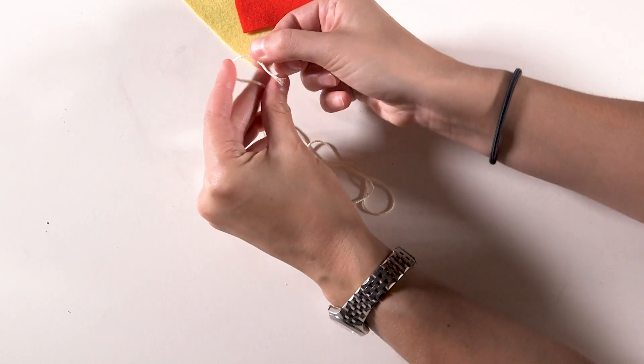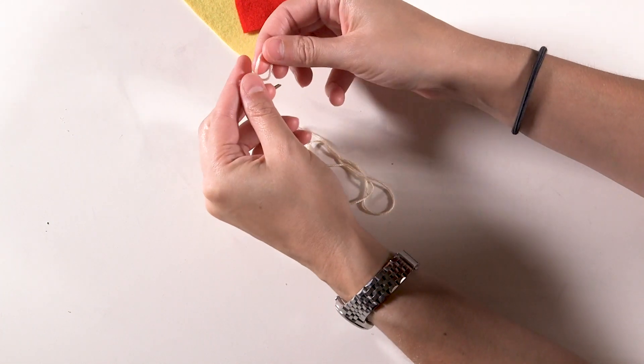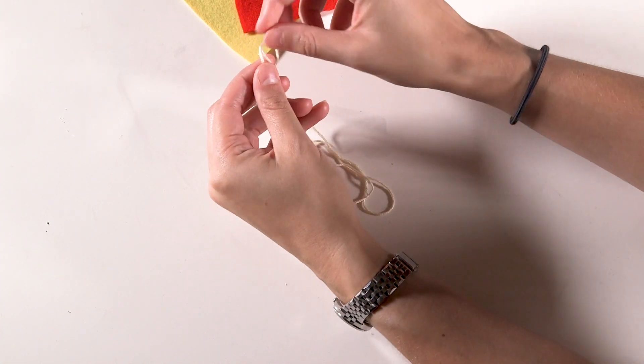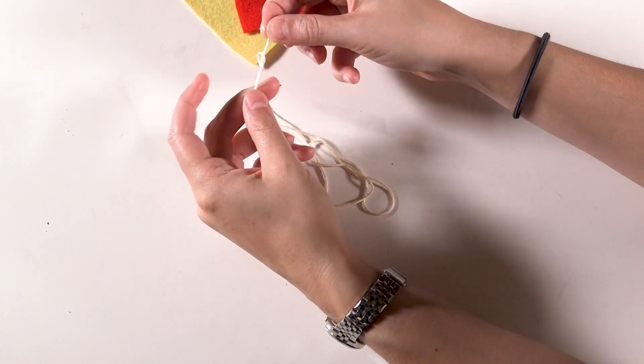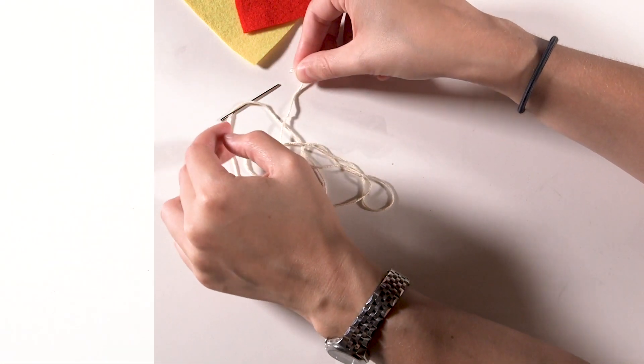Then tie a knot approximately 2cm from the end of the thread. I find a good tip is to wrap the thread around your finger and hold it in place with your thumb to make an X before pulling it through the gap.